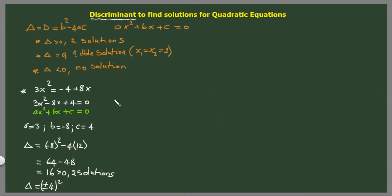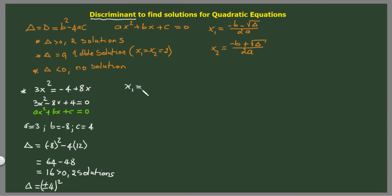The solutions of the discriminant are: x1 equals minus b minus the square root of the discriminant divided by 2a, and x2 equals minus b plus the square root of the discriminant divided by 2a. So since we have two solutions, x1 will be equal to minus b — b is minus 8, so minus b gives us 8 — minus the square root of the discriminant, which is 4, divided by 2 times a, which is 3, giving us denominator 6. That's 4 over 6.